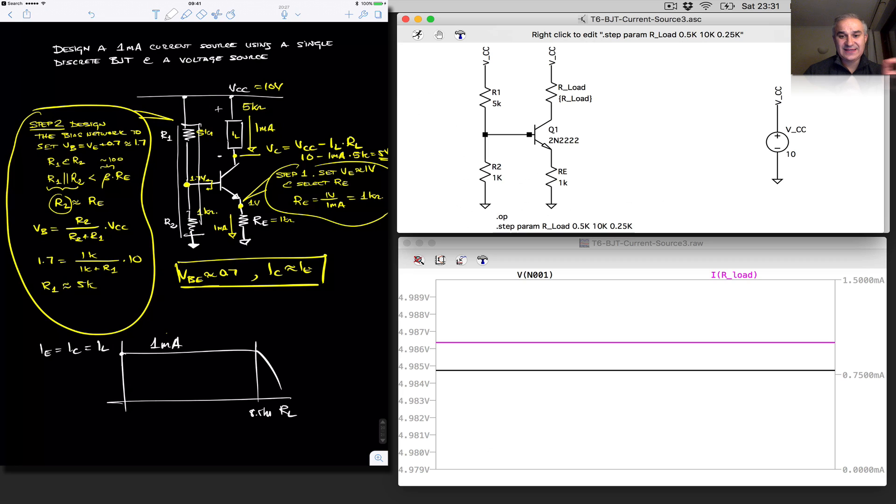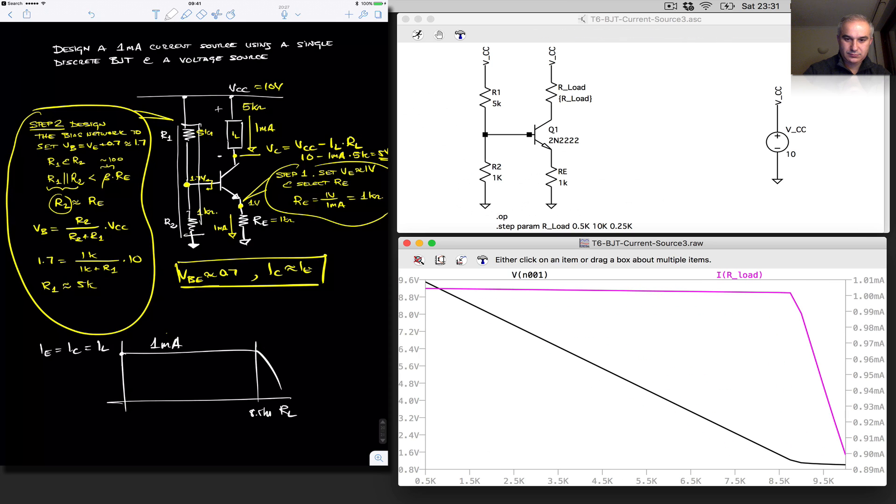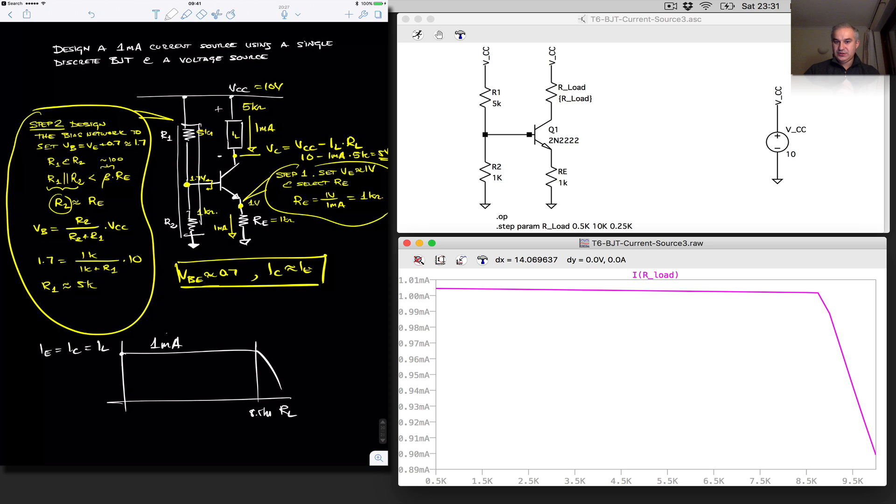Let's do a load analysis. Let's vary the load and check the compliance. So I'm using the spice directive data step. Param rLoad from 0.5k to 10k increments of 0.25k. Let's run it. And this is what we expected. So we have a stiff current source around 1 milliamp all the way to a little bit over 8.5k.